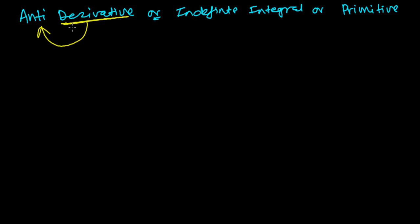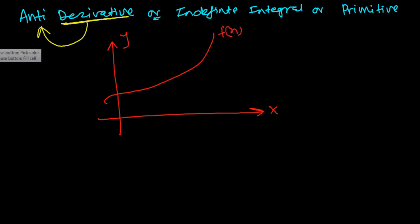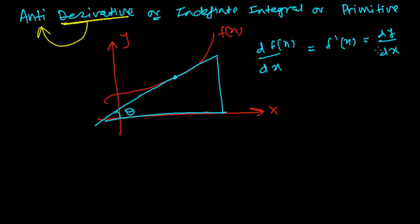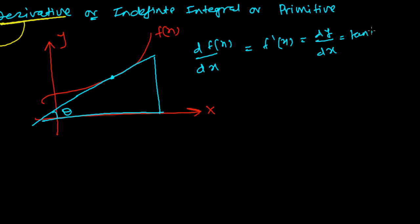Let me first tell you a little bit about the derivative so it's easier to understand anti-derivative. Let's say I have a function f(x). The derivative of this function at a point is simply the slope of the tangent at that point.